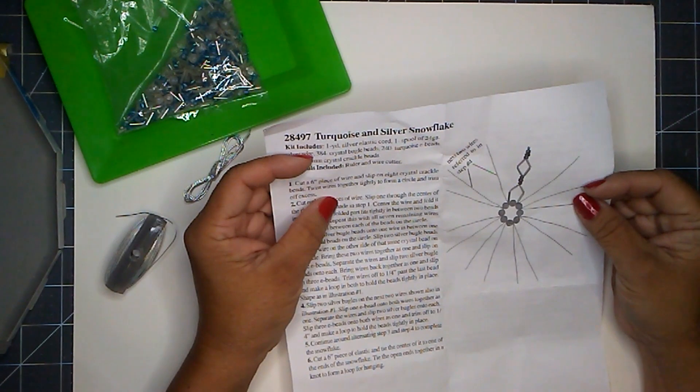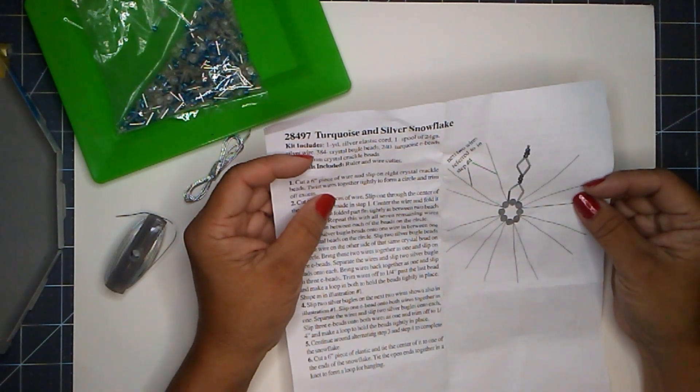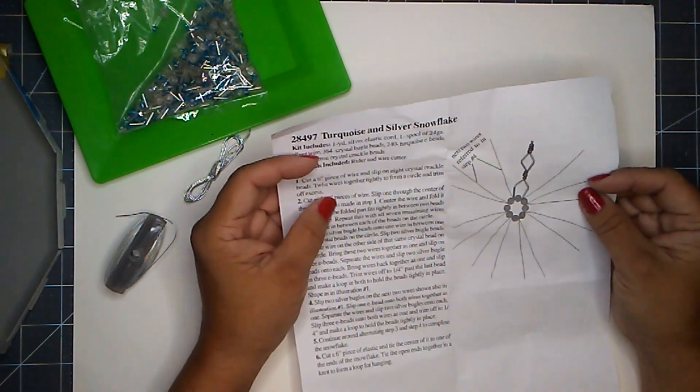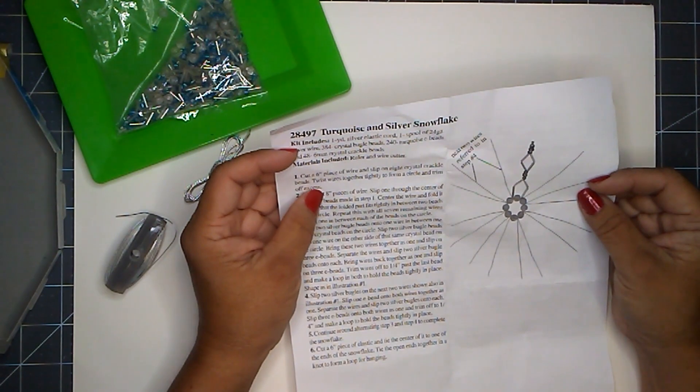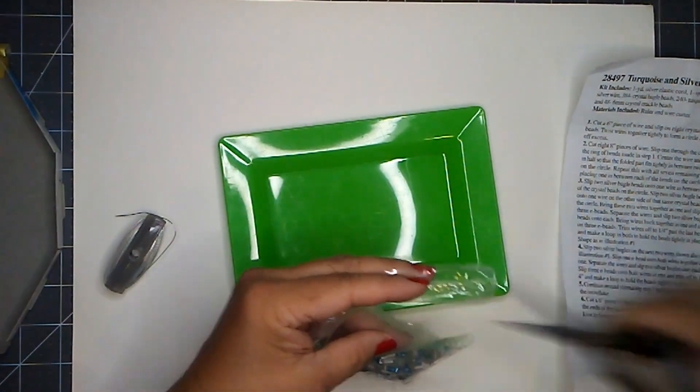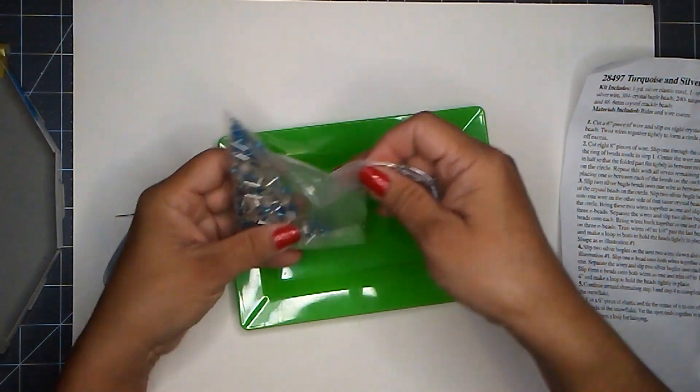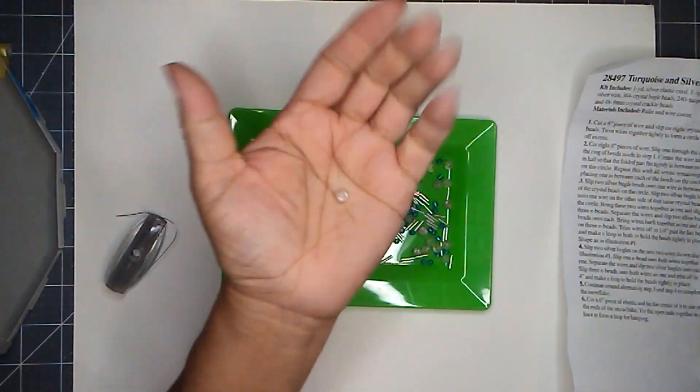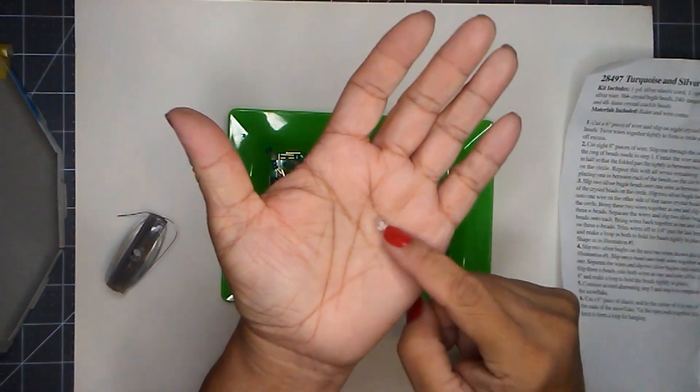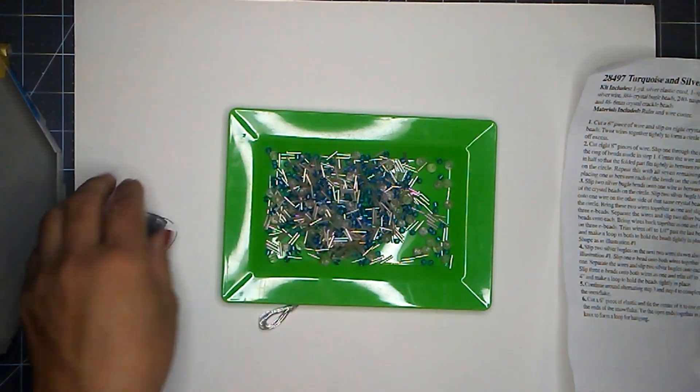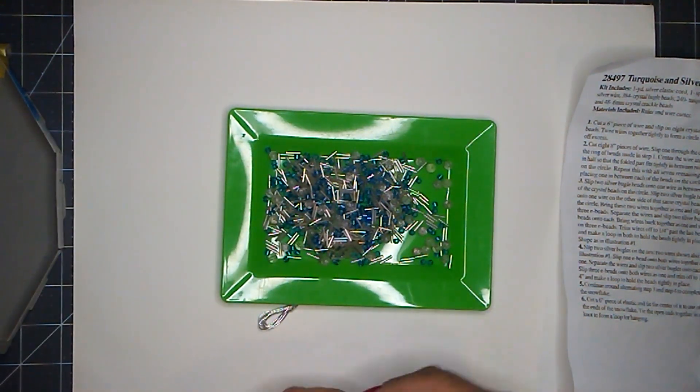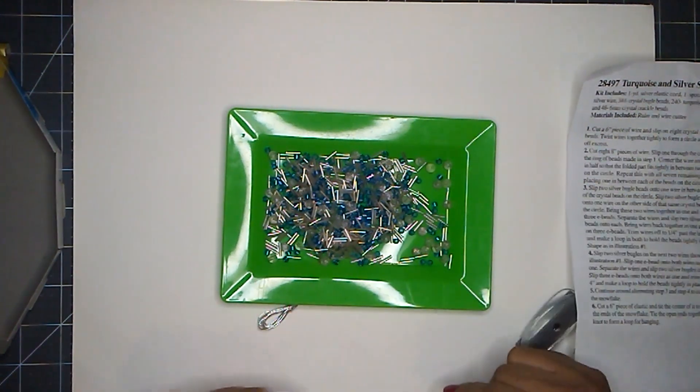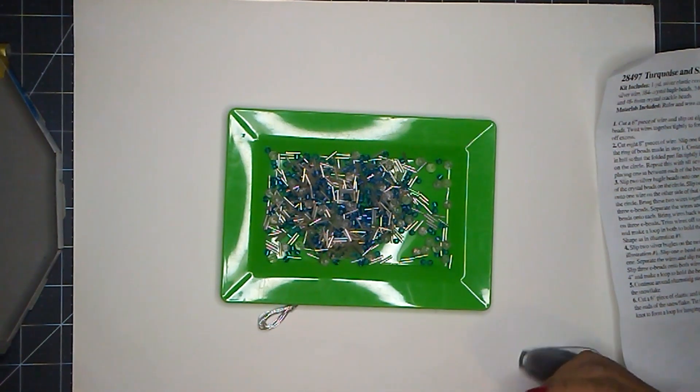It says to cut a six inch piece of wire and slip on eight crystal cracker beads. I don't know what that means. Let me open the beads, maybe we can tell. It must be these crystal crackle. Let me cut a six inch piece of wire here. I guess once you do the first one you can better understand how the rest of it goes.